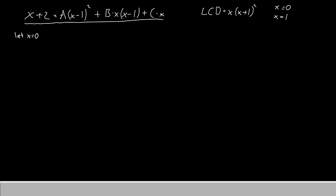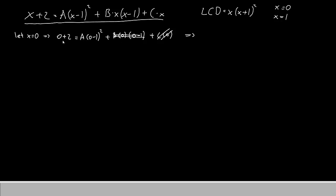Putting 0 into the equation: 0 plus 2 equals A times 0 minus 1 squared, plus B times 0 times 0 minus 1, plus C times 0. The C times 0 term cancels, and the B term also cancels because it's multiplied by 0. On the left we have 2, and on the right A times negative 1 squared is A times 1, which is just A. Therefore A equals 2. That's our first solution.